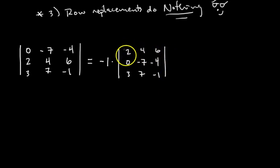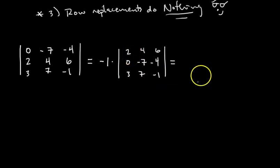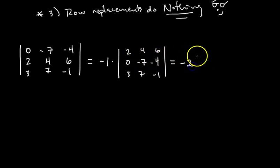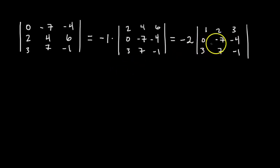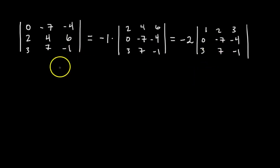Now we want a leading 1, so we scale row one by one half — effectively factoring a 2 out of the first row. This scales the determinant by 2, so out front we now have negative 2 times the determinant of the updated matrix [1 2 3 / 0 -7 -4 / 3 7 -1]. Next, eliminate the 3 in row three using row three minus three times row one — that's a row replacement, which doesn't change the determinant, so negative 2 carries over.